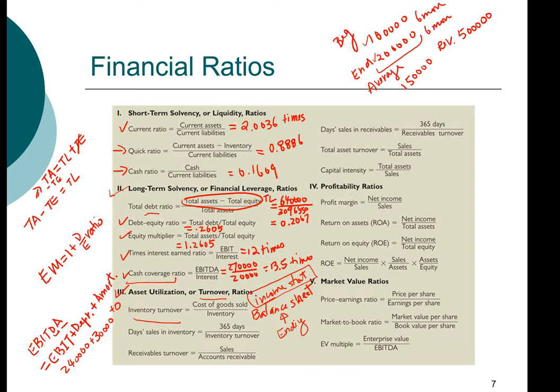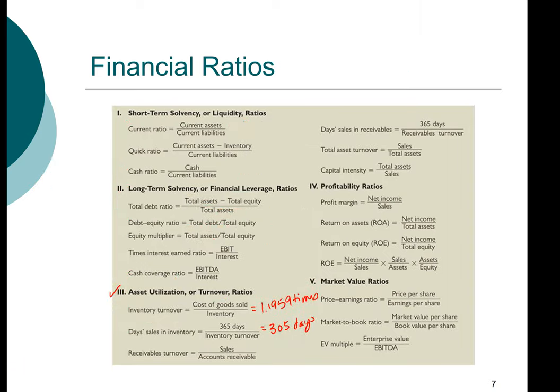At this point, I'm going to have you pause the video and use the income statement and the balance sheet to compute the inventory ratio, days in inventory, and come back and we will check your work. Did you get 1.1959 times for inventory turnover? Fantastic. And for days sales in inventory, we take 365 days divided by our inventory turnover. So we get 305 days.